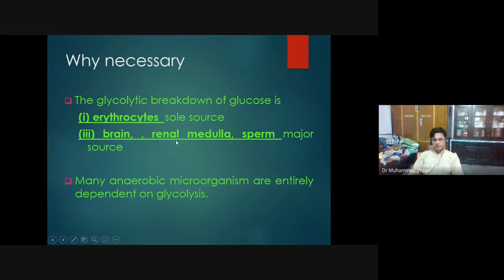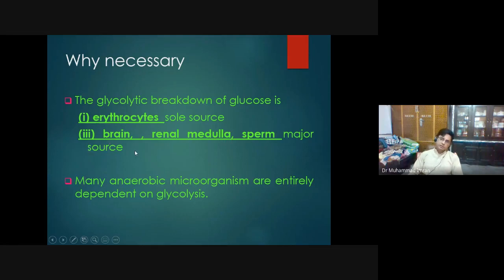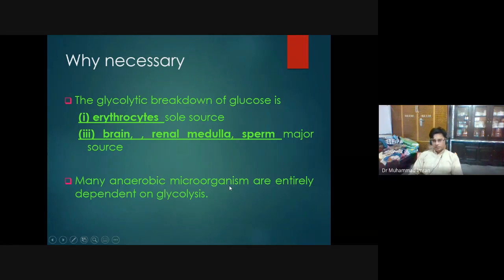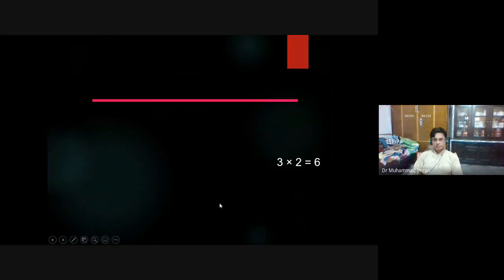Brain cells (about 40%), renal medulla, and sperm also rely on glucose as their major source of energy, as they do not have enough mitochondria. Many anaerobic microorganisms are entirely dependent on glycolysis and obtain their energy from glycolysis.